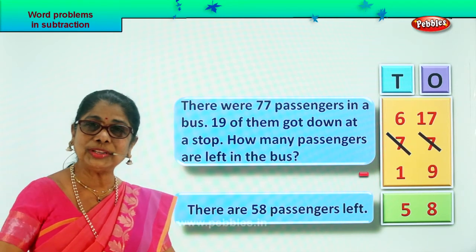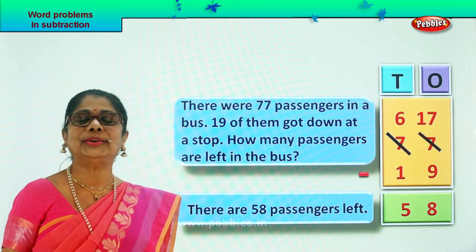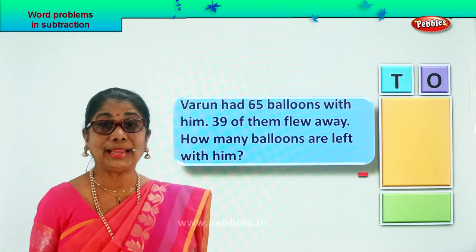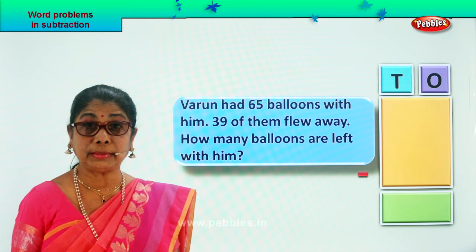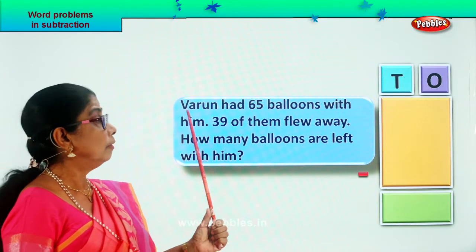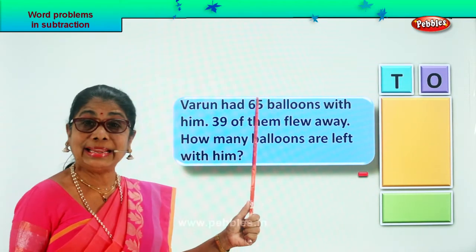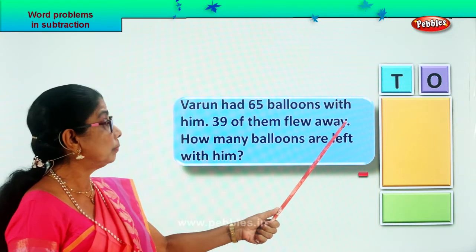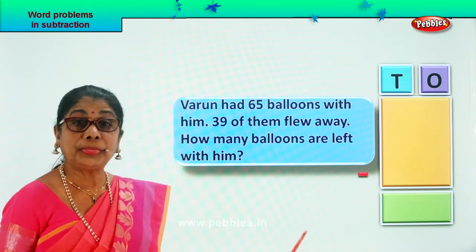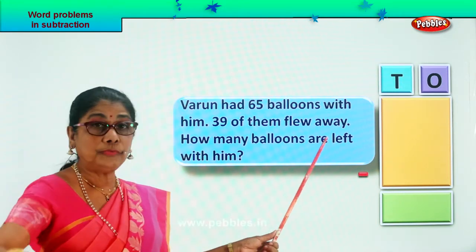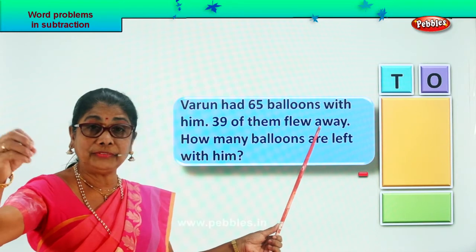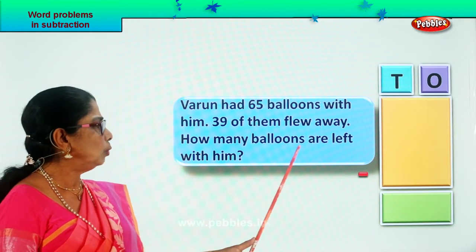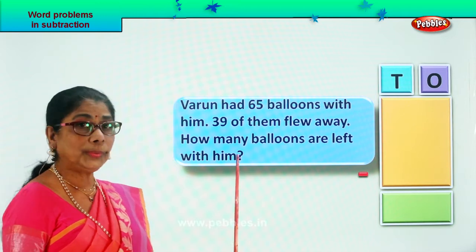Did you enjoy the word problem? Good. Shall we take another word problem? Let's read the problem together. Varun had 65 balloons with him. 39 of them flew away — he let them go and they went up. How many balloons are left with him?